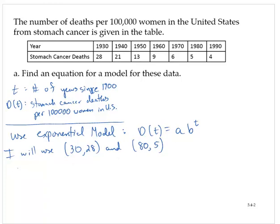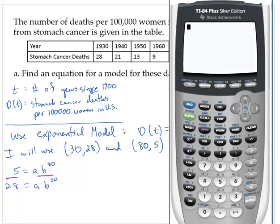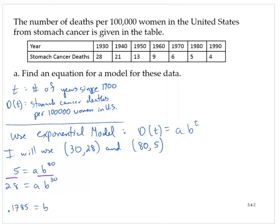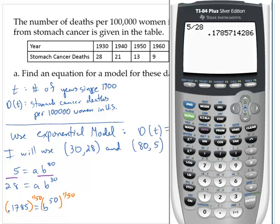Using the second point first: 5 = a · b^80, and 28 = a · b^30. Dividing left-hand sides and right-hand sides: 5/28 = 0.17857, and that equals b^50. Raising both sides to the 1/50th power, I take that answer and raise it to the 1/50th power, which gives me b ≈ 0.966.